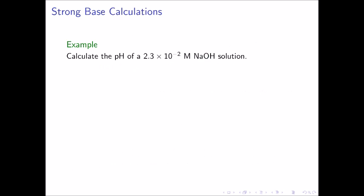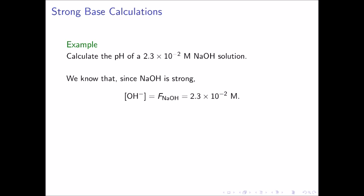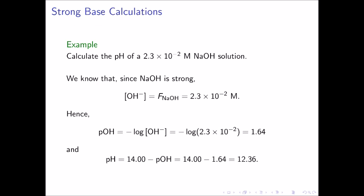As an example, let's calculate the pH of a 2.3 times 10 to the negative 2 molar sodium hydroxide solution. We know that sodium hydroxide is a strong base, and therefore the concentration of hydroxide ion is equal to the formal concentration of sodium hydroxide, which is 2.3 times 10 to the negative 2 molar. Therefore, the pOH is the negative log of 2.3 times 10 to the negative 2, which is equal to 1.64. We can now use our relationship between pH and pOH to find that pH is equal to 14.00 minus 1.64, which is equal to 12.36.